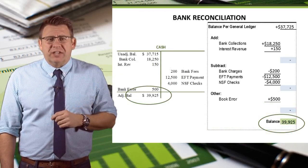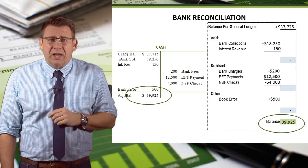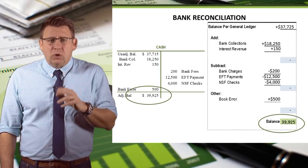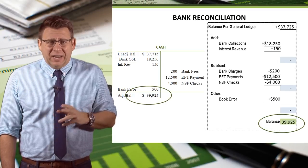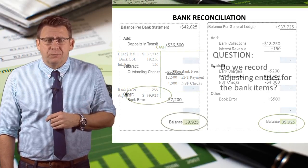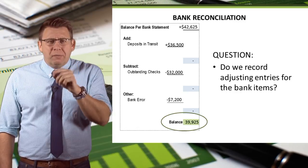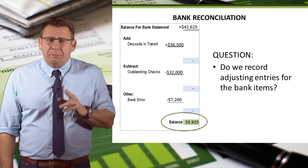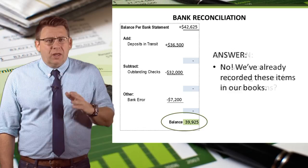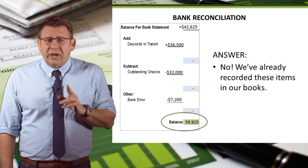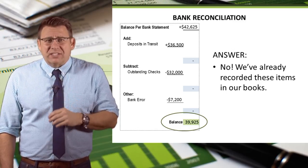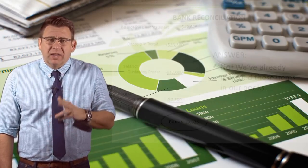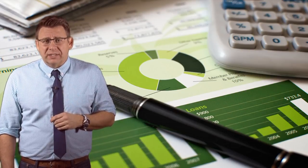After we post these adjusting entries, you can see the adjusted trial balance for cash is equal to our bank reconciliation amount of $39,925. Finally, do we make adjusting entries for the items that reconcile the bank side? No, we don't, because we've already recorded these items on our books — it's the bank that hasn't recorded these. And that concludes this short video on how to make adjusting entries for the bank reconciliation. Thank you.